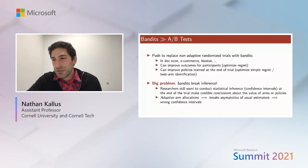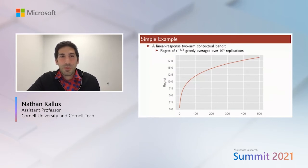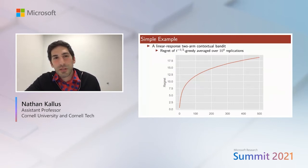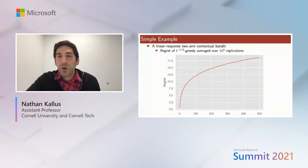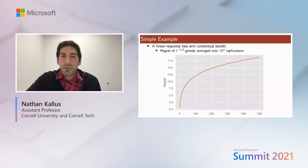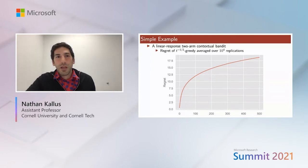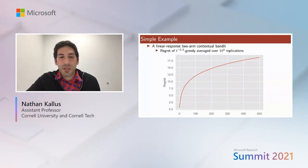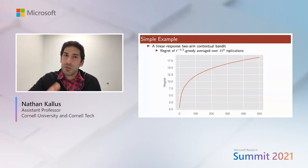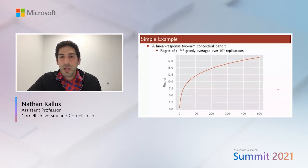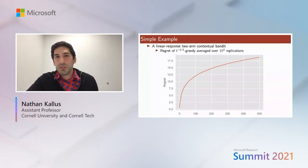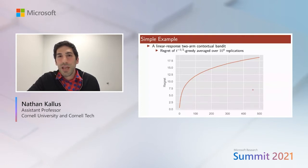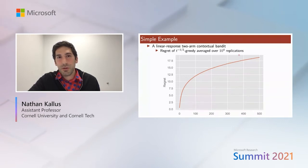To illustrate this, I'll show a simple example. I'm considering a two-armed contextual bandit where the conditional expectation of rewards given context is a linear function. I'm running an epsilon-greedy algorithm where epsilon is 1 over square root t — a slowly decaying exploration rate — and looking at capital T of 500. Here I'm showing the average regret over 10,000 replications, and we see a familiar sublinear curve.